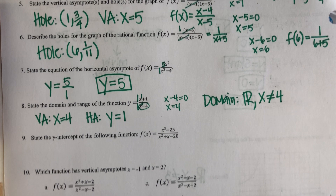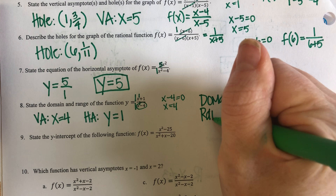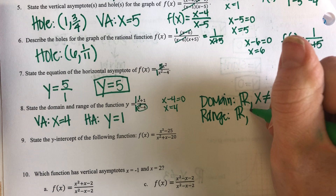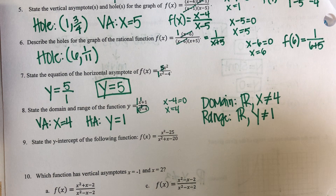Whatever these values are affect my domain and my range. My domain — I will always say that my domain is all real numbers, but here I have to restrict the X value of four, which came from my vertical asymptote. And then my range — again, I'm going to state all real numbers, but it is restricted by my horizontal asymptote.